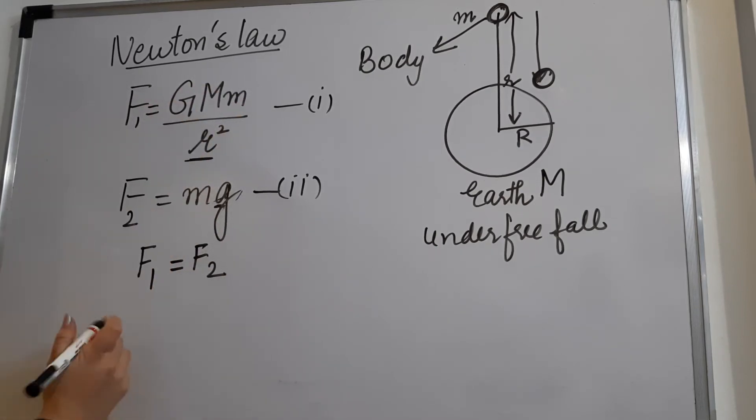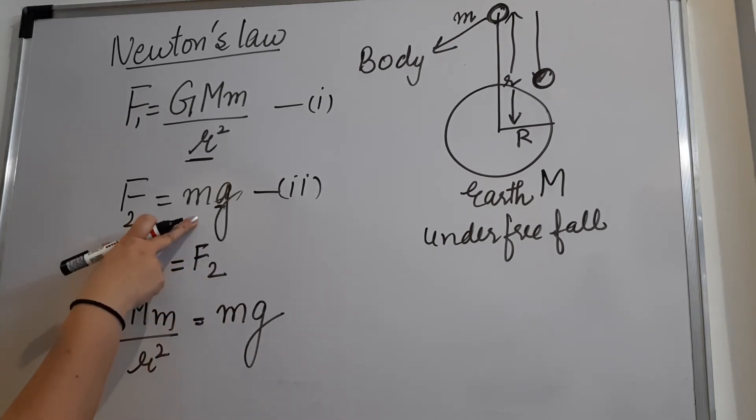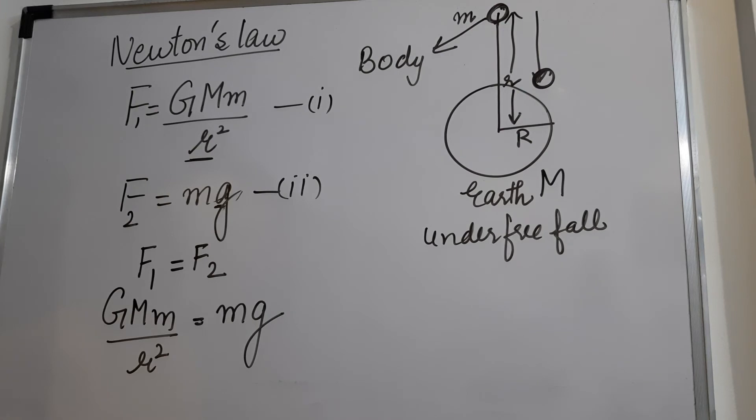Now, if I substitute these values over here, F1 is what? It is GMm over r square, and F2 is what? mg. Why I have taken small m over here? Because this small mass is coming under the effect of gravity. Earth is not moving up. What is coming down? Body is coming down. So I have taken small m over here.